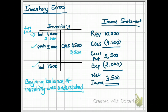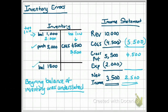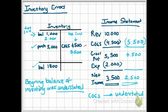Now let's look at the effect on the income statement. Cost of goods sold was $5,500, which means our gross profit is $4,500. We calculated this by taking revenue of $10,000 minus the correct amount of $5,500. Then we subtract our expenses to give us a net income of $2,500. So if our beginning inventory was understated, our cost of goods sold was also understated — by the amount of the error, which was $1,000. It was $4,500 but should have been $5,500.